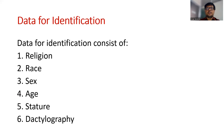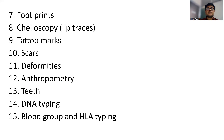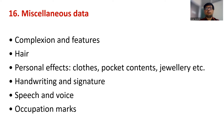Data for identification: there are certain main data points — religion, race, sex, age, stature, dactylography, footprints, chelioscopy, tattoo marks, scars, deformities, anthropometry, teeth, DNA typing, blood group, and HLA typing. Each of these data points will be covered separately in individual videos, and links will be available in the description box.